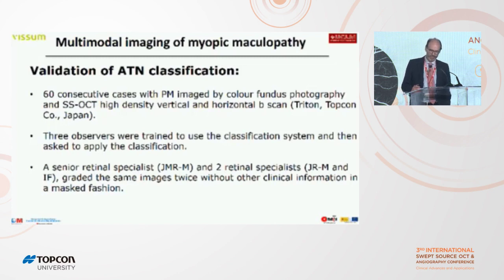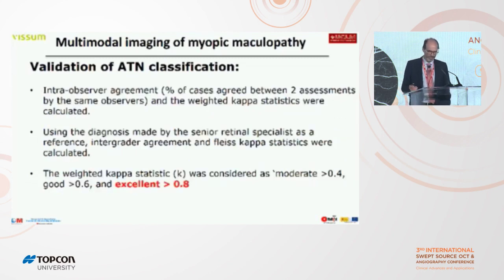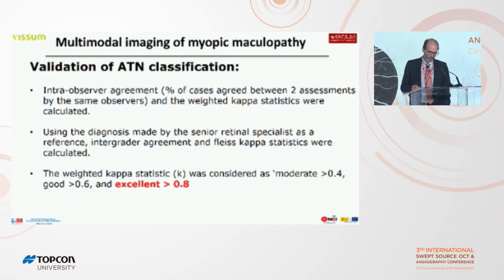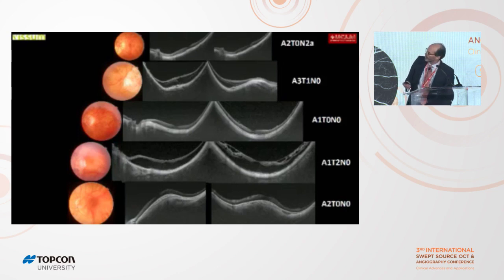Three observers were trained to use the classification system and asked to apply it. A senior retinal specialist and two retinal specialists from a hospital graded the same images twice, with one month between both examinations and with no other clinical information in a masked fashion. Inter-observer agreement, percentage of cases agreed by all observers, and weighted kappa statistics were calculated. Using the senior retinal specialist as reference, inter-grader agreement and kappa statistics were expressed as moderate (>0.4), good (>0.6), and excellent (>0.8).